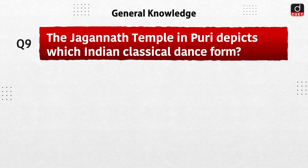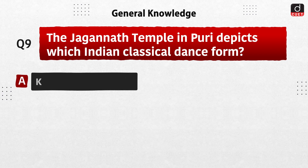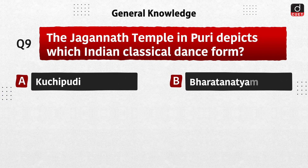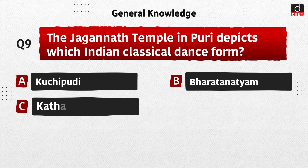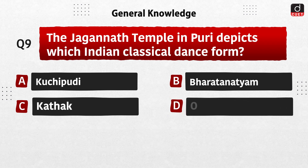Next question: the Jagannath temple in Puri depicts which Indian classical dance form? Kuchipudi, Bharatnatyam, Kathak, or Odissi? The correct answer is option D, Odissi.